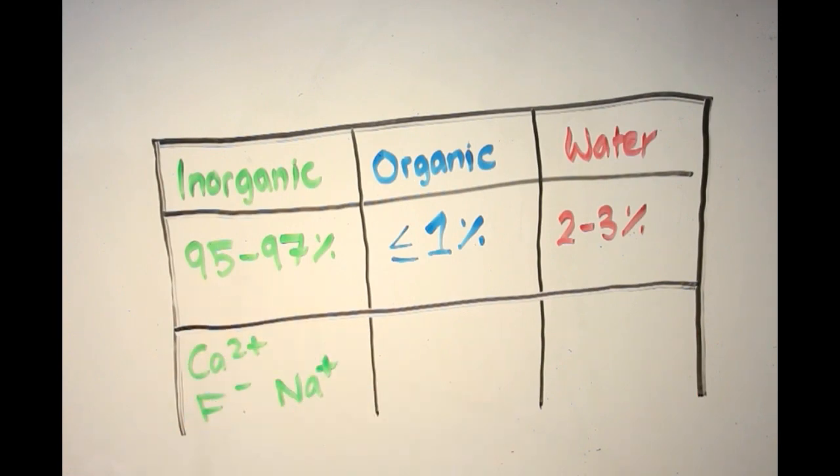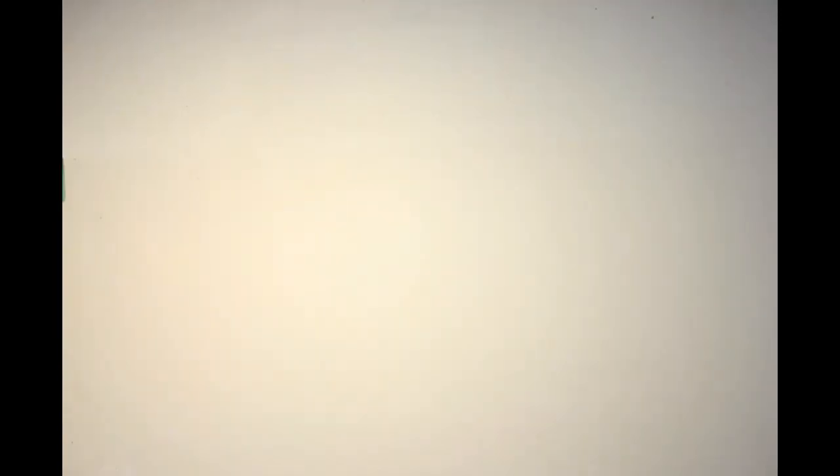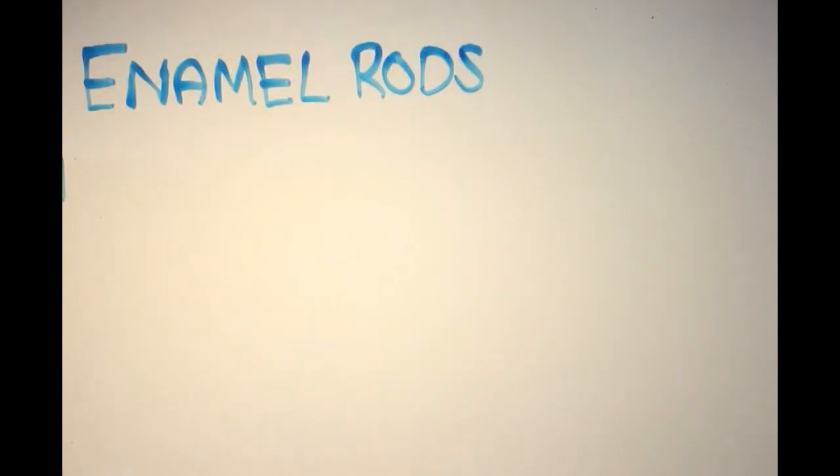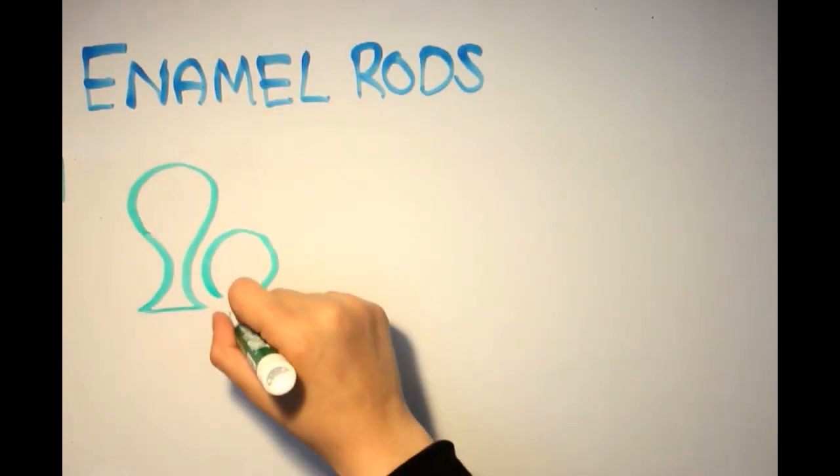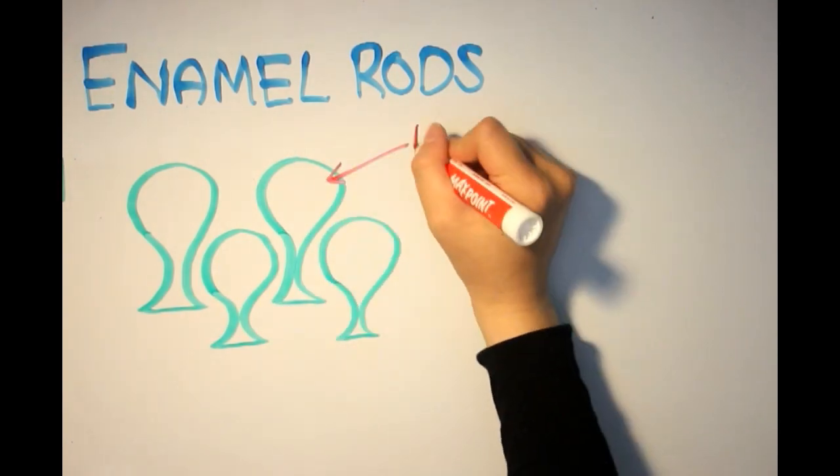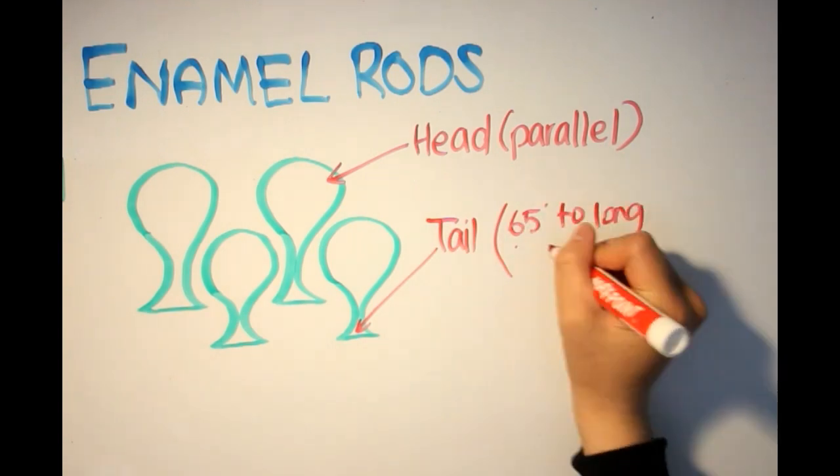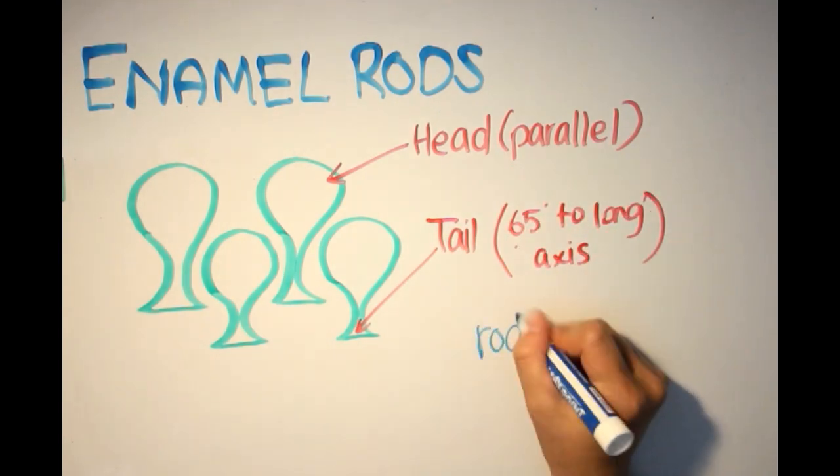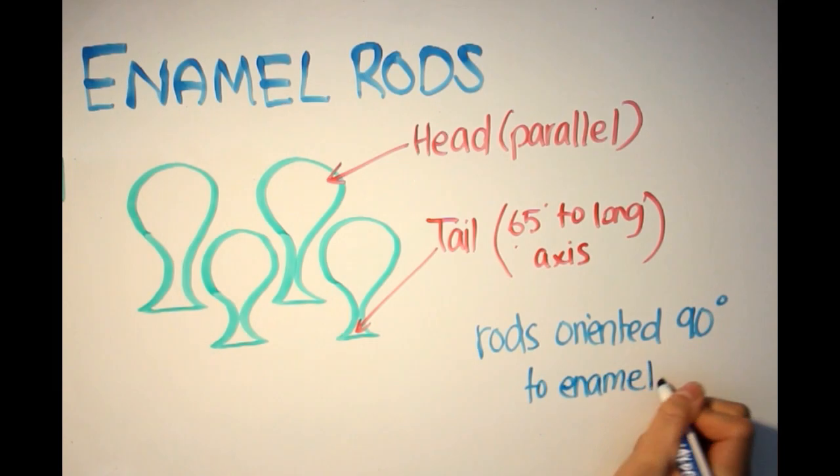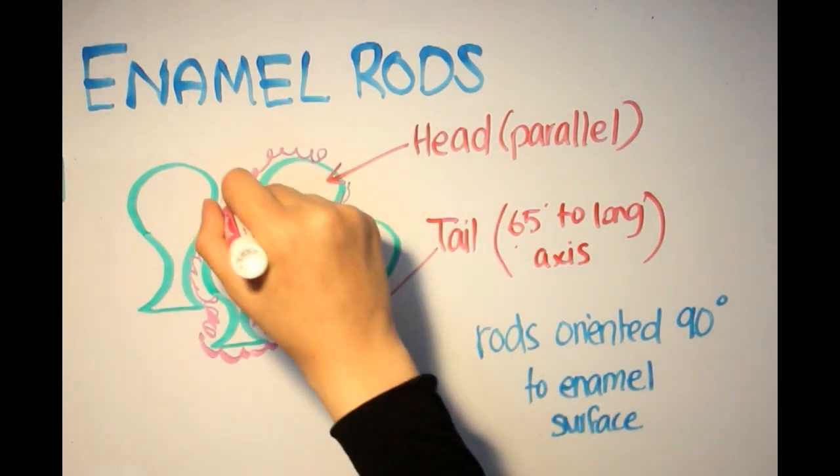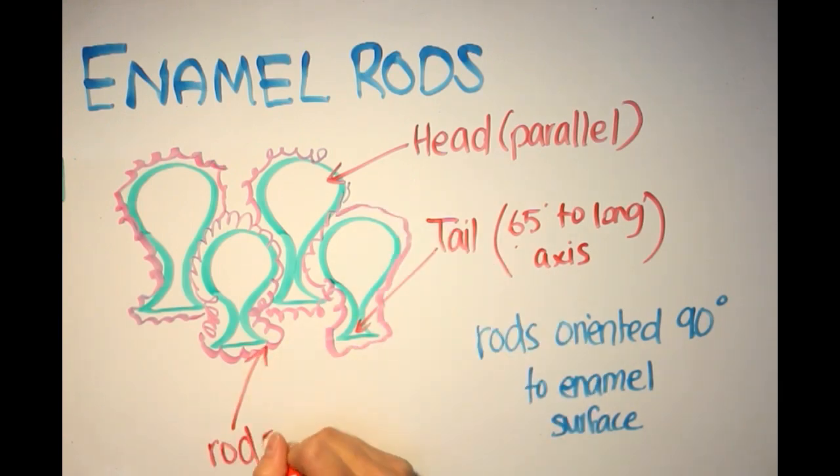As we mentioned earlier, enamel is mainly composed of minerals such as calcium hydroxyapatite crystals. These hexagonal crystals are highly organized to form rods and interrods that exhibit different crystal orientations. Surrounding these rods and crystals is a fine network of organic matrix called the rod sheath.